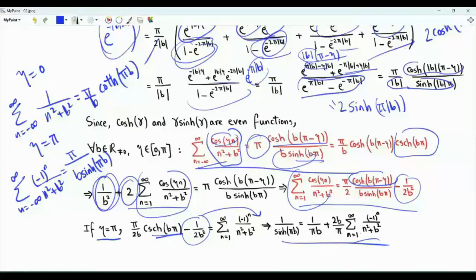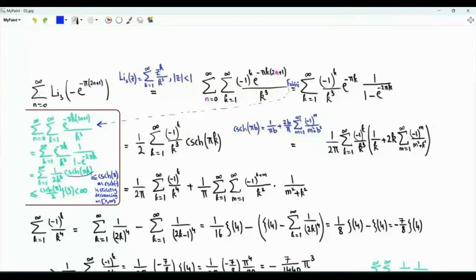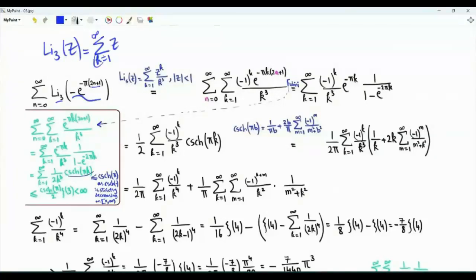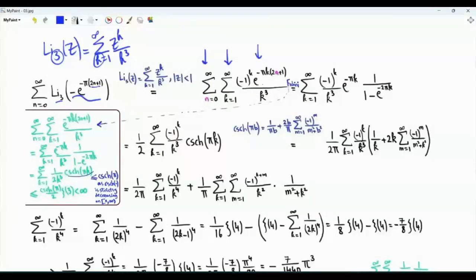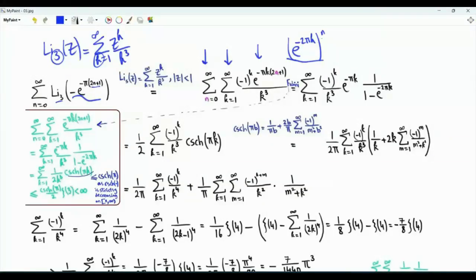Let's now move to the second sum of interest involving the trilogarithm. We have the sum over non-negative integers n of the trilogarithm of −e^(−π(2n+1)). Since the magnitude of the argument is strictly less than 1, we can use the series expansion: Li₃(z) = Σ_{k=1}^∞ z^k/k³. This converts the single sum into a double sum. The dependence on n is e^(−2πk) raised to the power n, which is a geometric series.